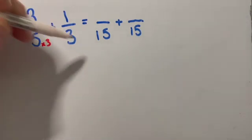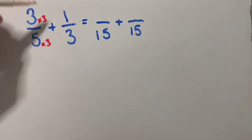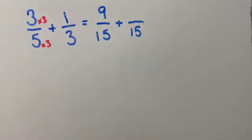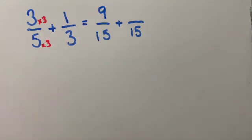Five times three makes 15. So I do the same to the top. Three times three is nine. So you've now got an equivalent fraction. Three over five is exactly the same as nine over 15.